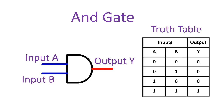Looking at the AND gate truth table: input A=0, input B=0, output is 0. Input A=0, input B=1, output is 0. Input A=1, input B=0, output is 0. Input A=1, input B=1, output is 1.